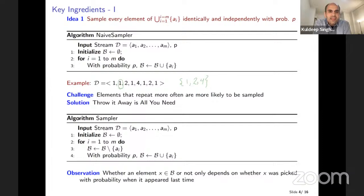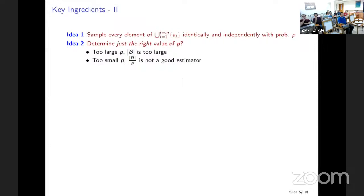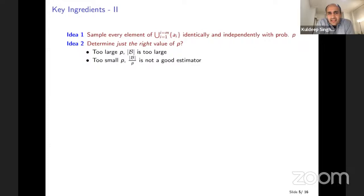We have to worry about the choice of P. If P is too large, the bucket will be too large — we don't want too many elements in our bucket. If P is too small, then the size of the bucket over P is not going to be a very good estimate. So we don't want P to be too large or too small.